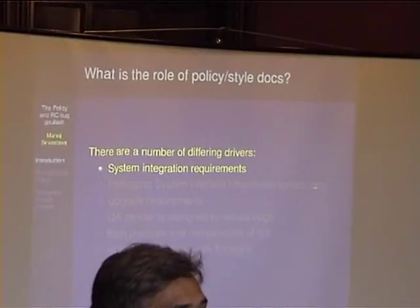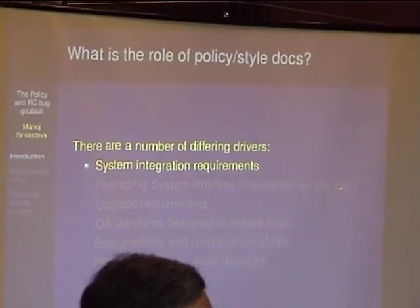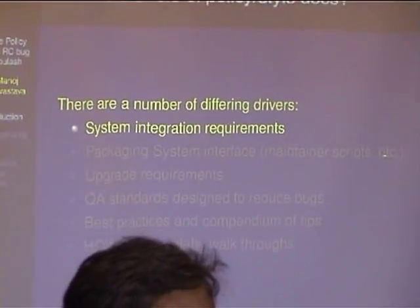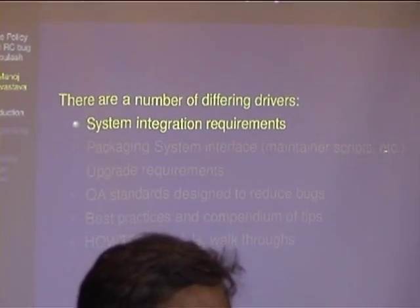The main reason that drove writing the technical policy document was that we are creating an OS by integrating bunches of software written by all kinds of people, and there is only a bare minimum of matrix or structure that puts these things together. The FHS is one such document that provided some kind of guideline, but it doesn't address things to the level of detail we need.